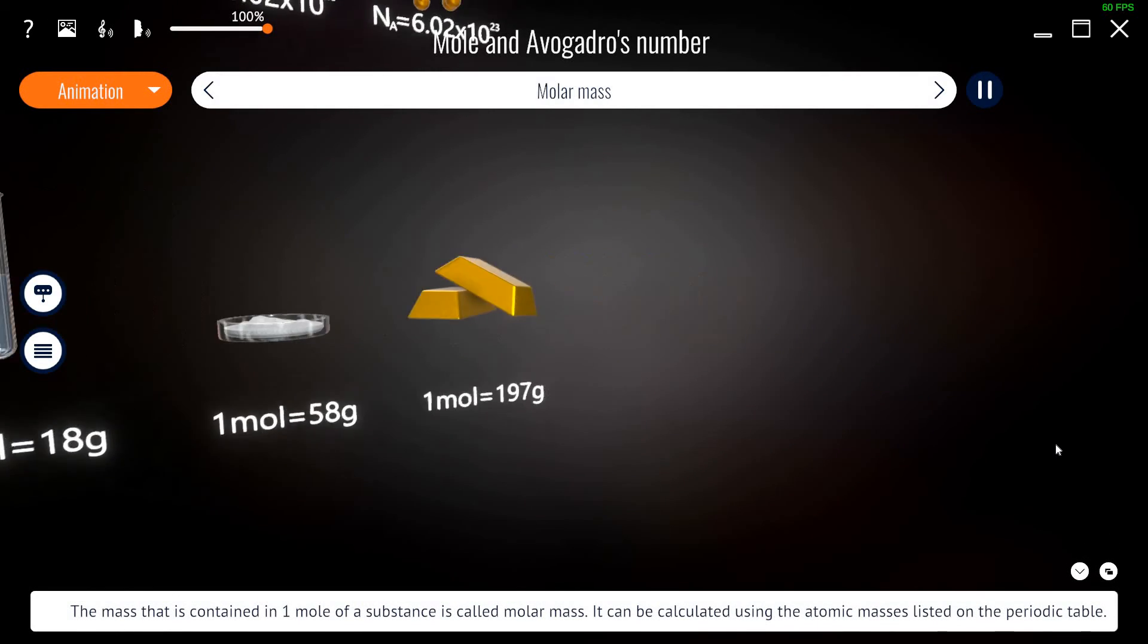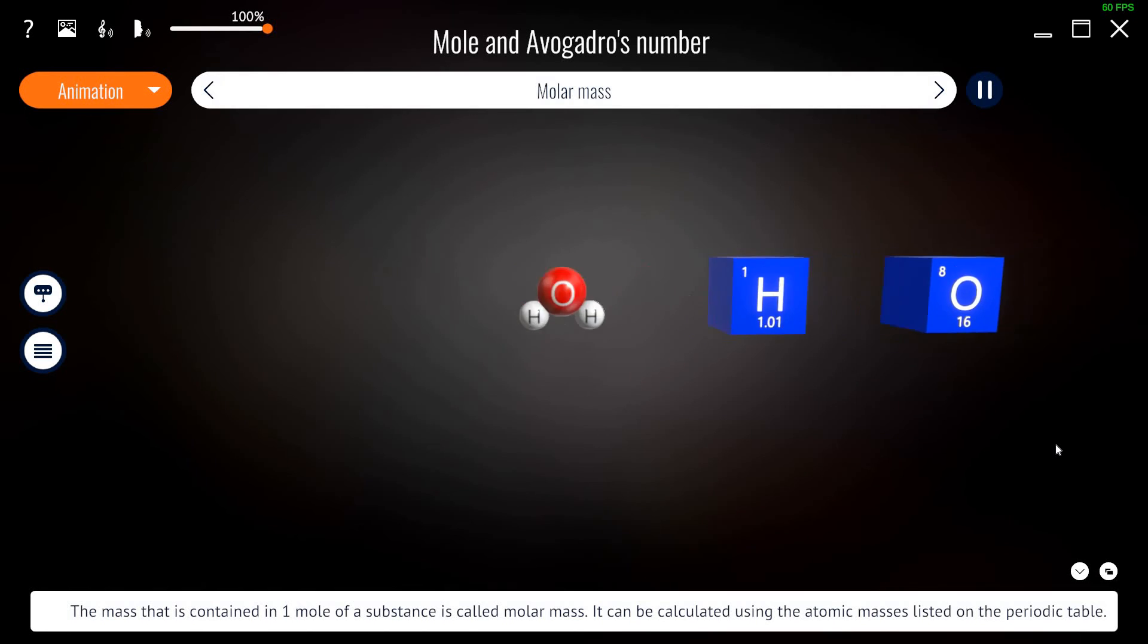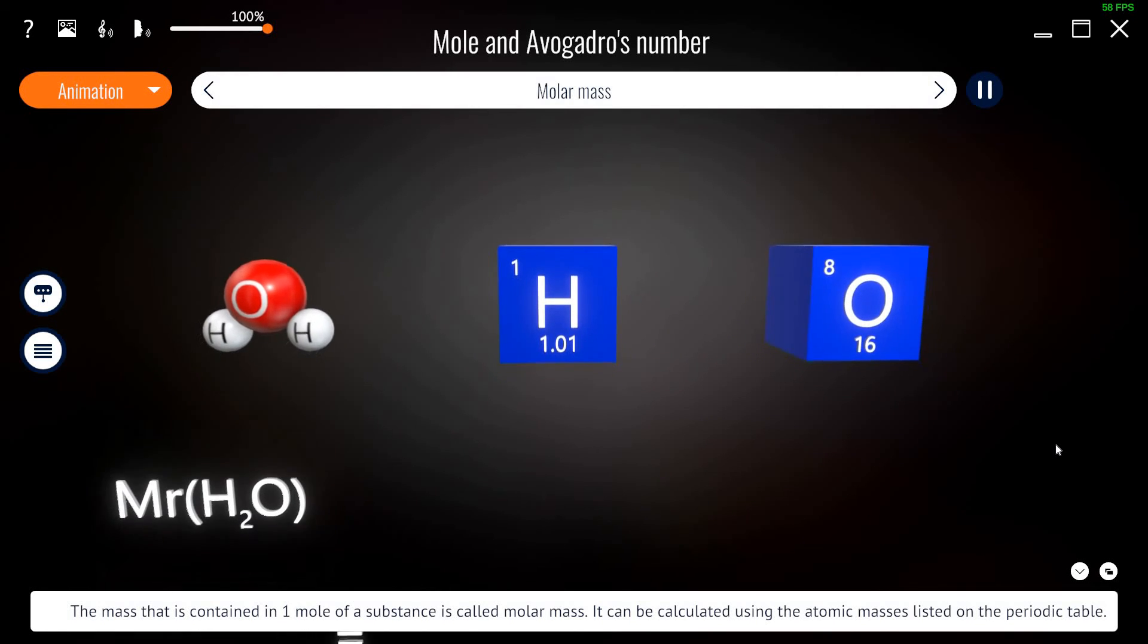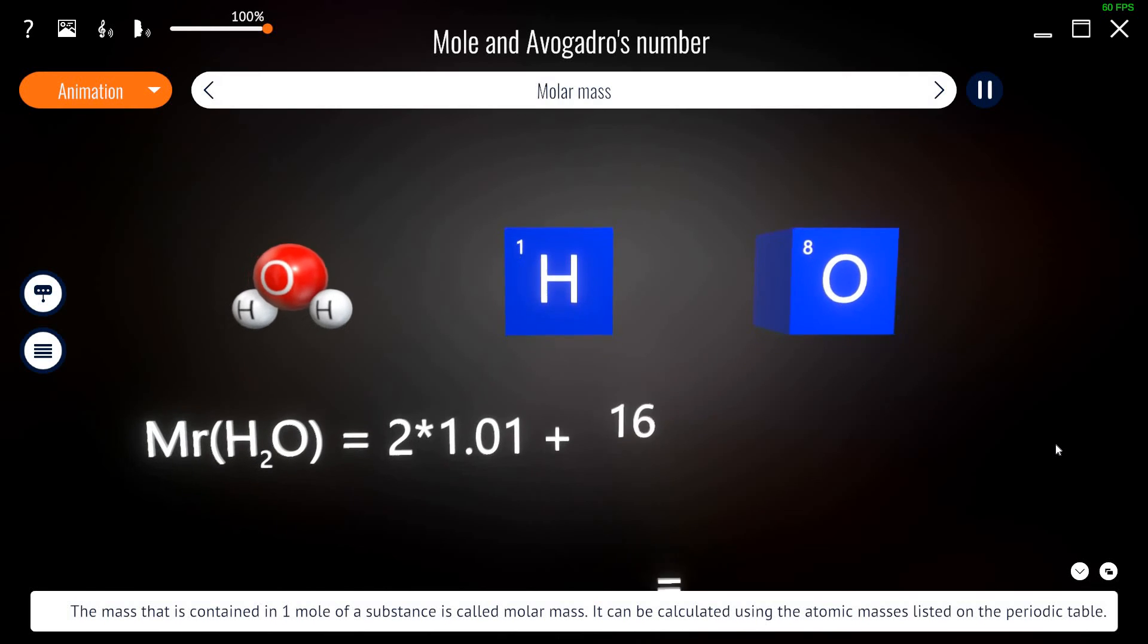The mass that is contained in one mole of a substance is called molar mass. It can be calculated using the atomic masses listed on the periodic table.